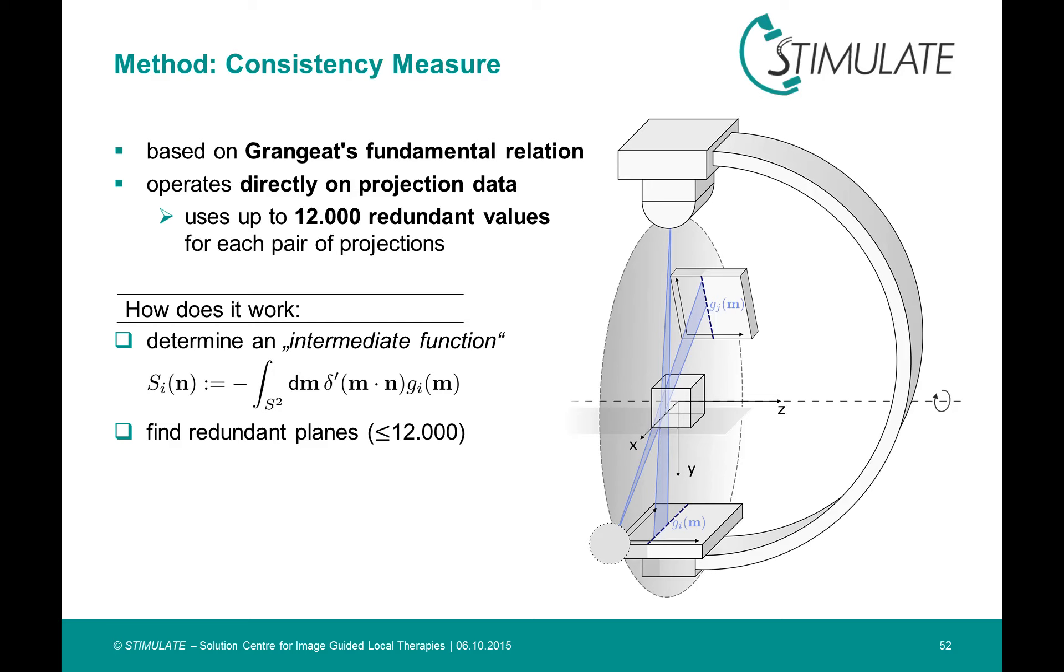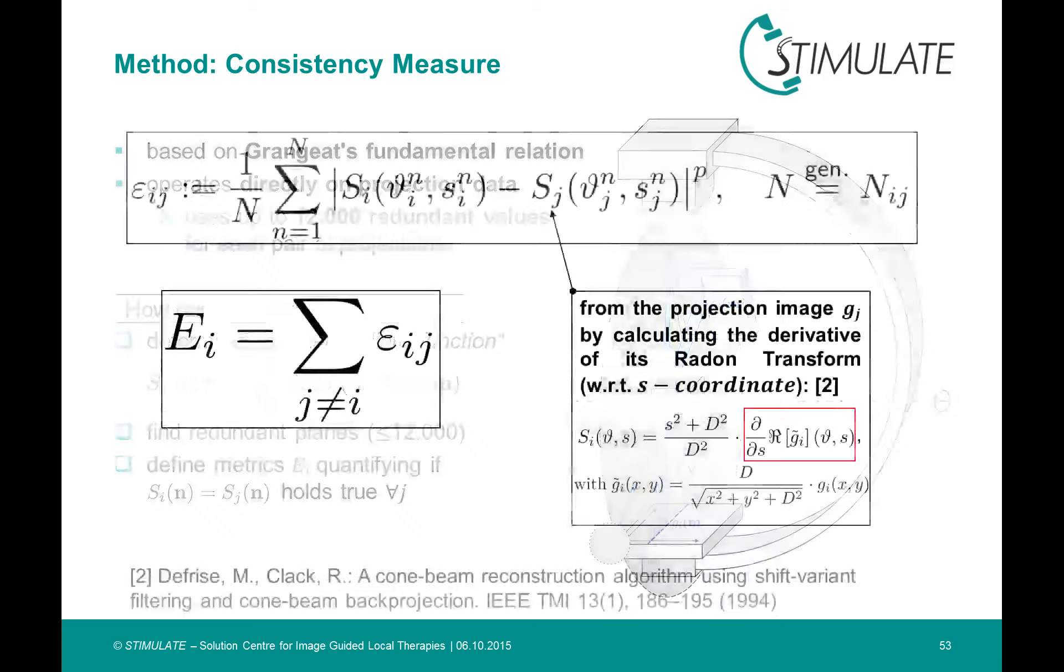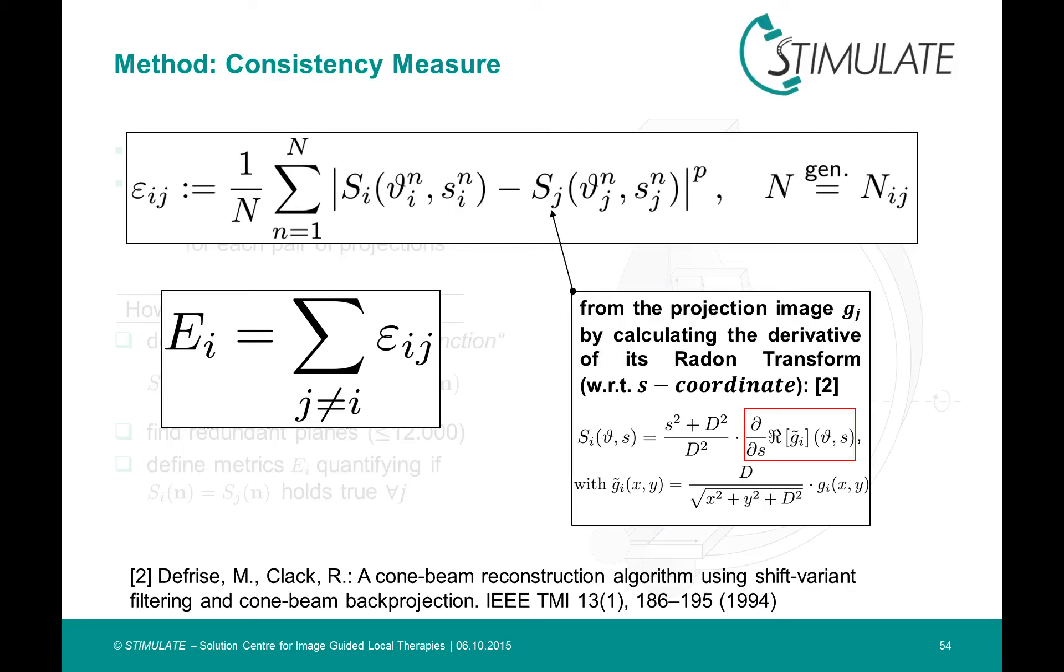Subsequently, we can quantify the accordance of the two intermediate function values for each plane. For this purpose, we propose a normalized P-norm metric, where we have a tuning parameter P.